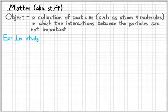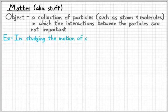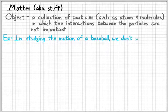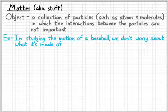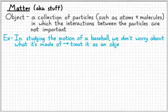Here's a good example. If in physics class we are studying the motion of a baseball, like we hit a baseball with a bat and we want to know how far away it's going to land, and if we don't need to worry about what it's made out of, then we're going to treat it as an object.